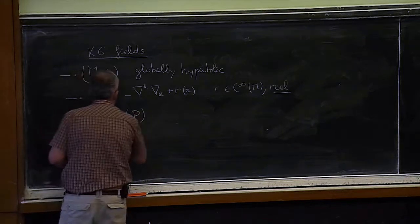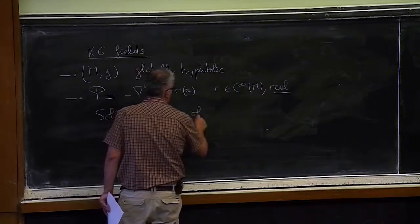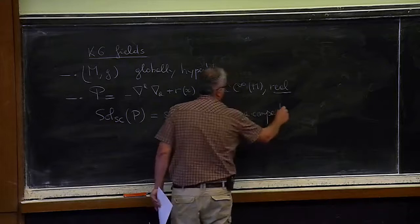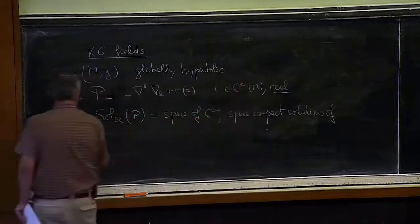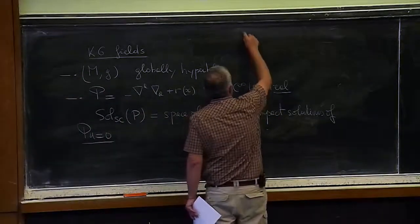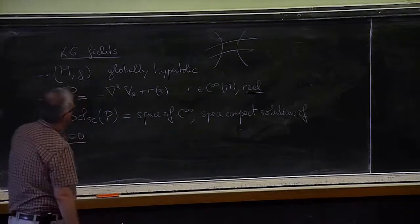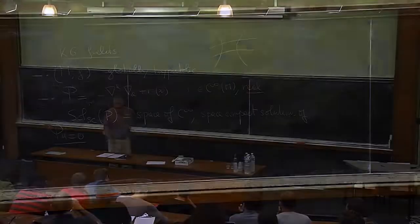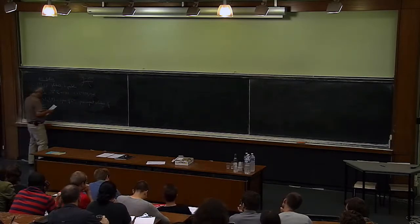Sol_sc(P) is the space of C-infinity space-compact solutions of Pu = 0. Space-compact means that the intersection of the support with any Cauchy surface is compact. These are solutions corresponding to smooth compact Cauchy data.